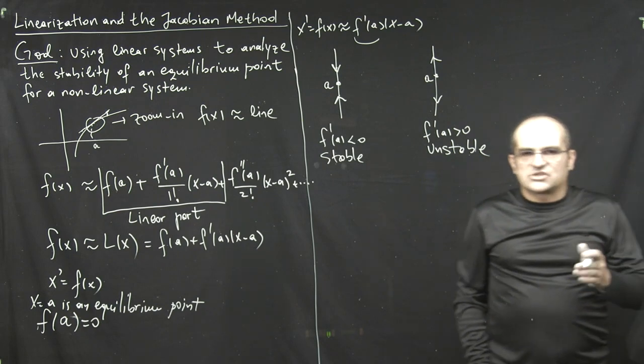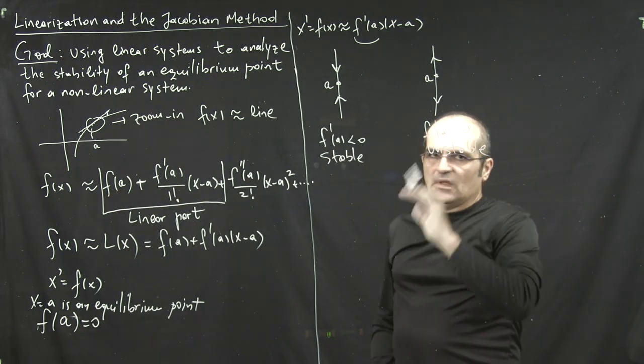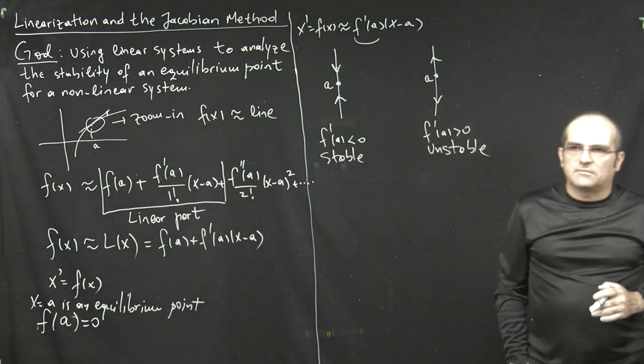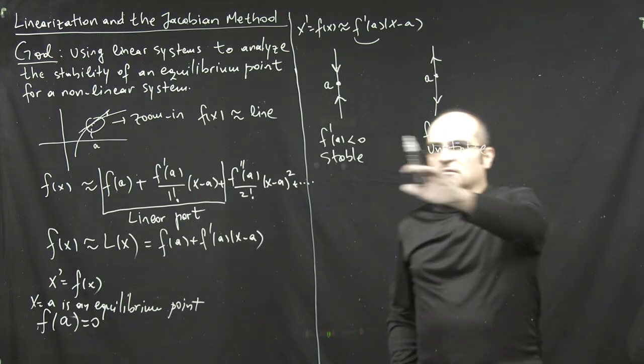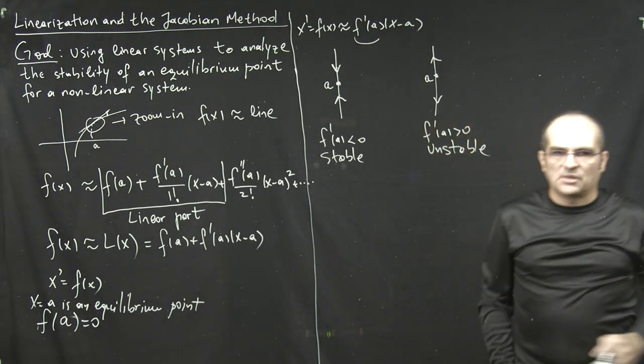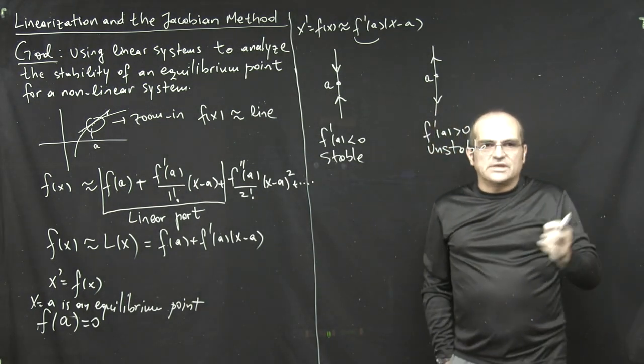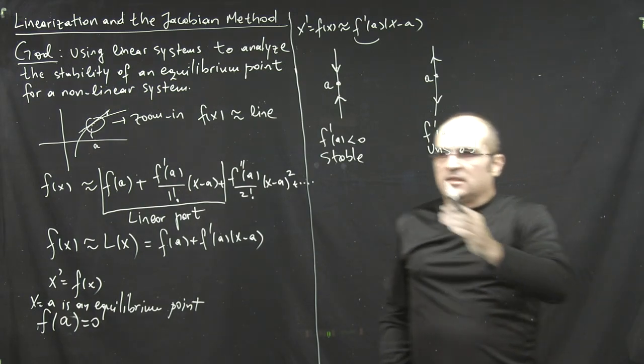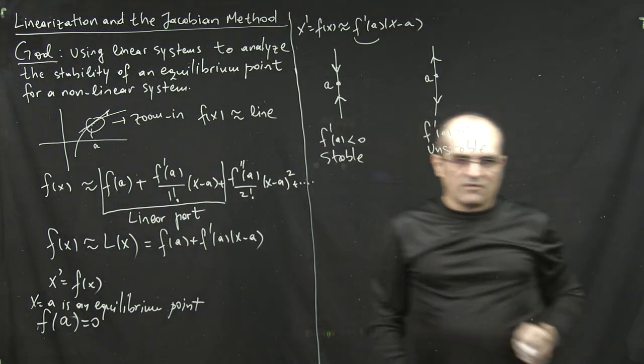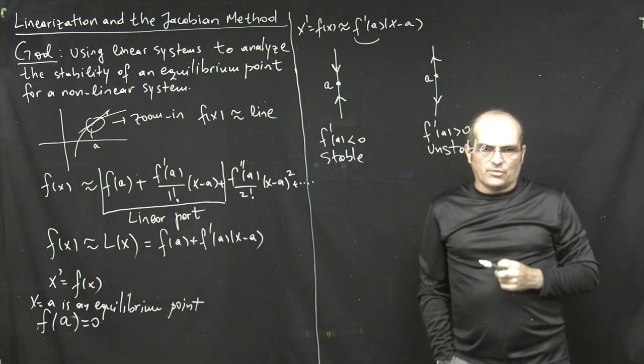And, it boils down, essentially, in the end to a condition on the eigenvalues to be negative, in order to, for the point to be stable. For a single ODE, it's very straightforward. The analogous method is, essentially, to look at the derivative evaluated at the equilibrium point.